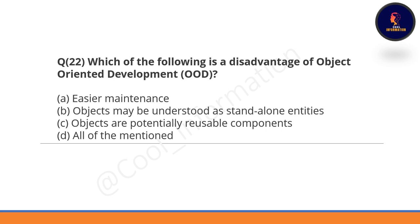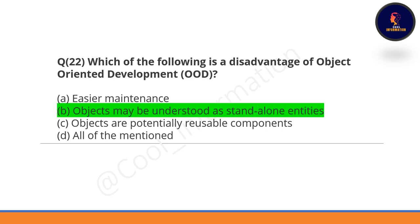Question 22: Which of the following is a disadvantage of object-oriented development? Option A is easier maintenance, Option B is 'objects may be understood as stand-alone entities,' Option C is 'objects are potentially reusable components,' and Option D is all of the mentioned. The correct option is B — objects may be understood as stand-alone entities.